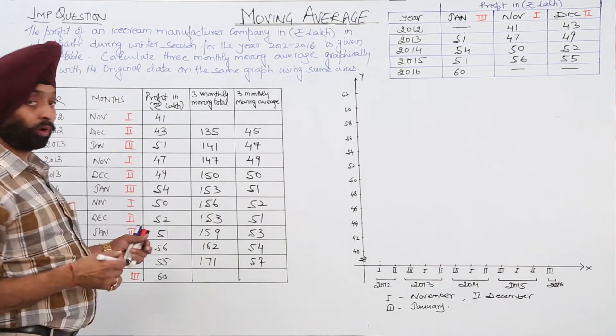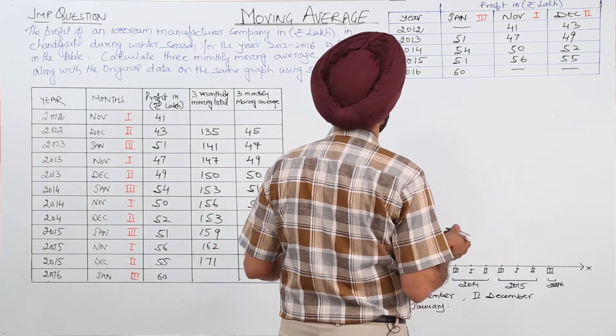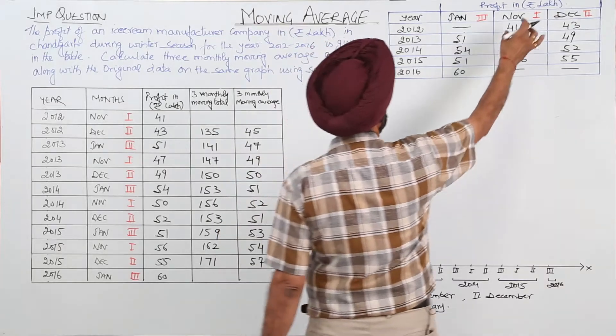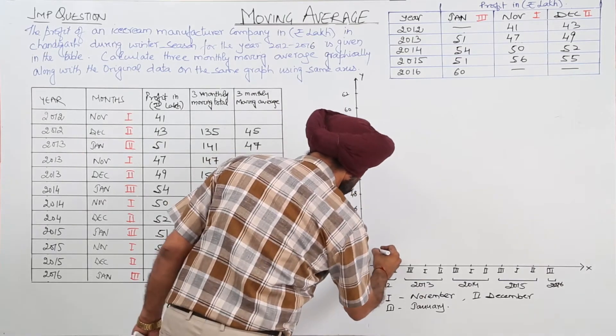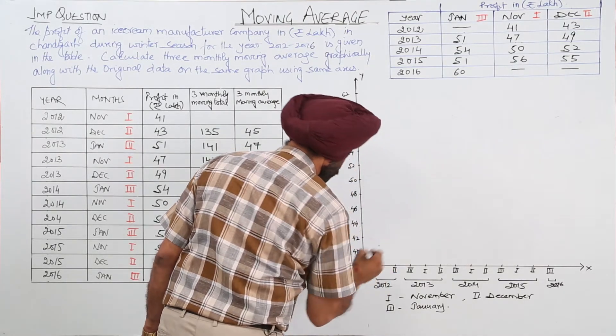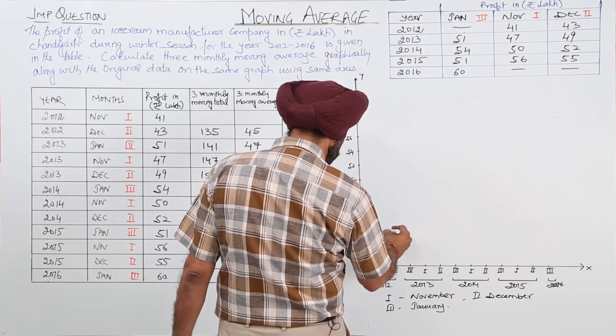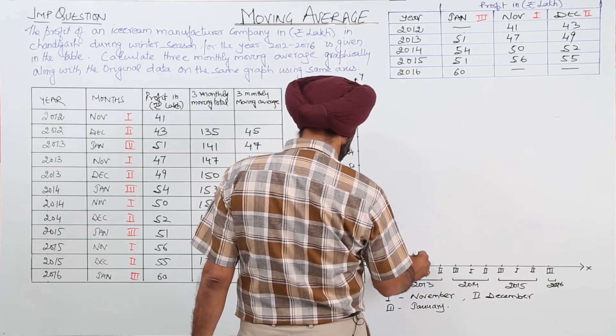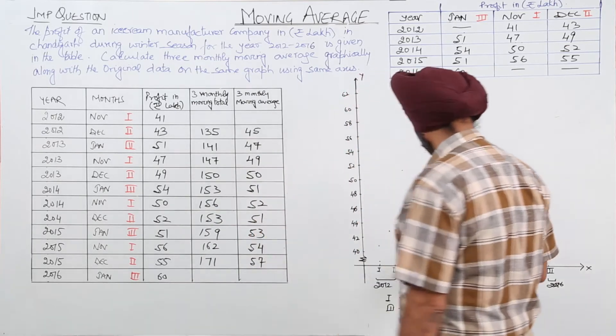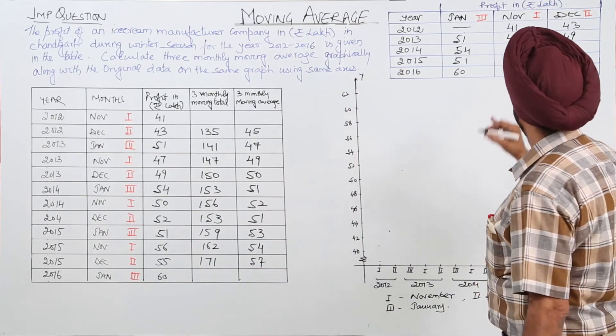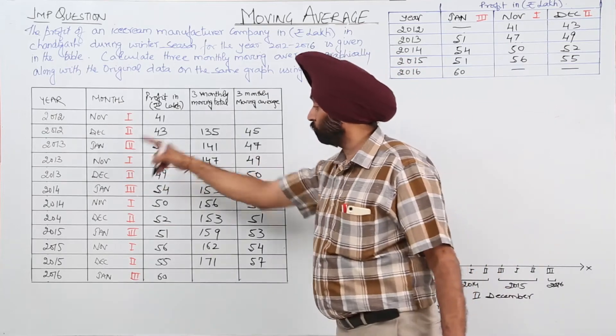Now let's plot it graphically. First of all with the original data. Now, original data starts from first for 2012 and it is 41. So first 41, approximately here. Then 43 for 2, 43, 51. Then 51, 47, again for 1. You can just check it. 41, 47 is for 1.